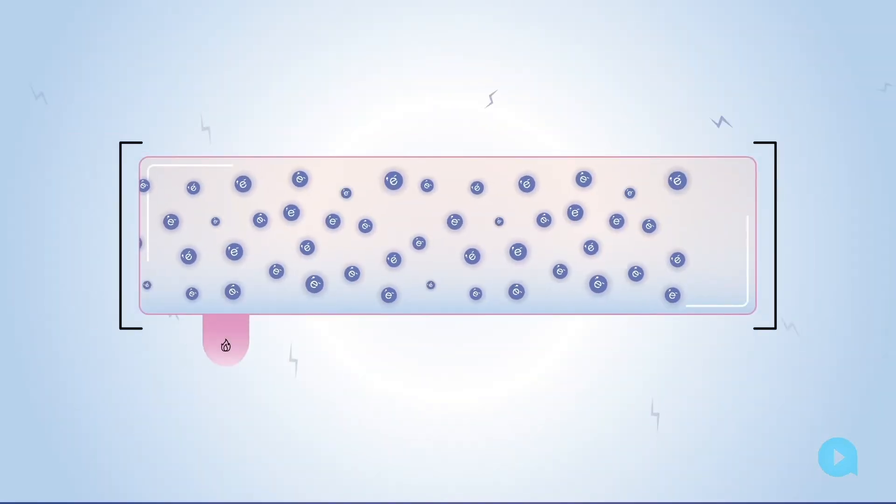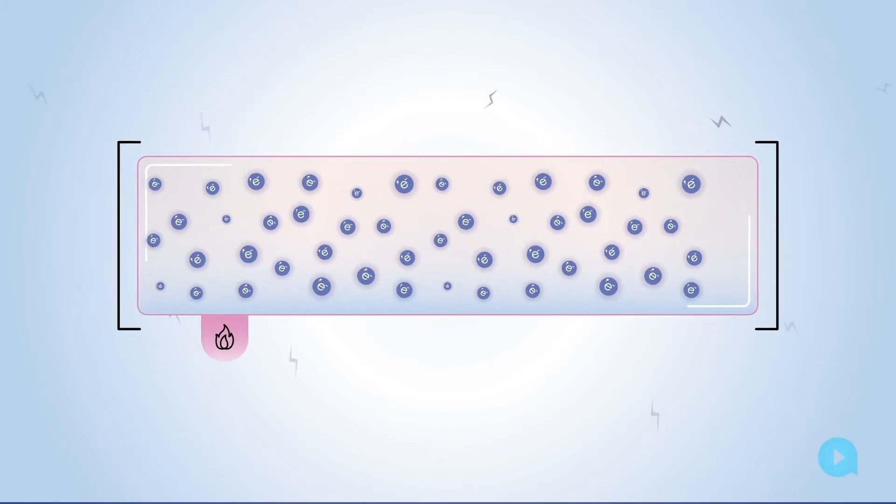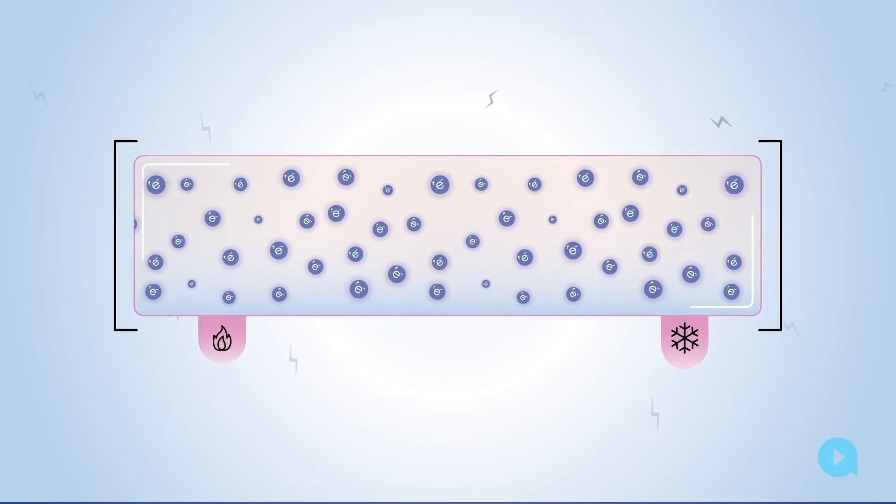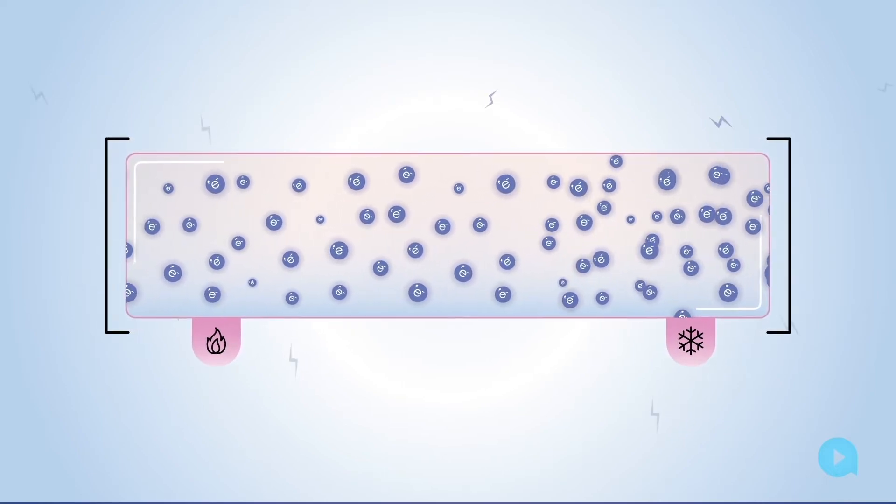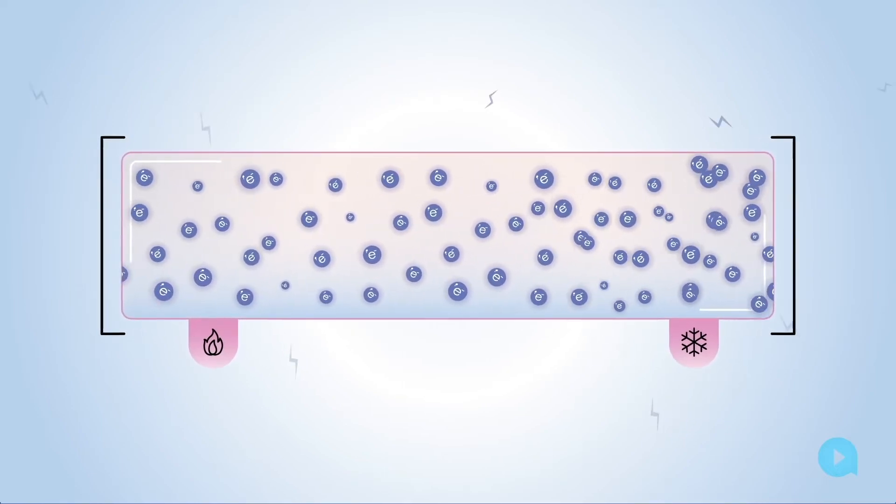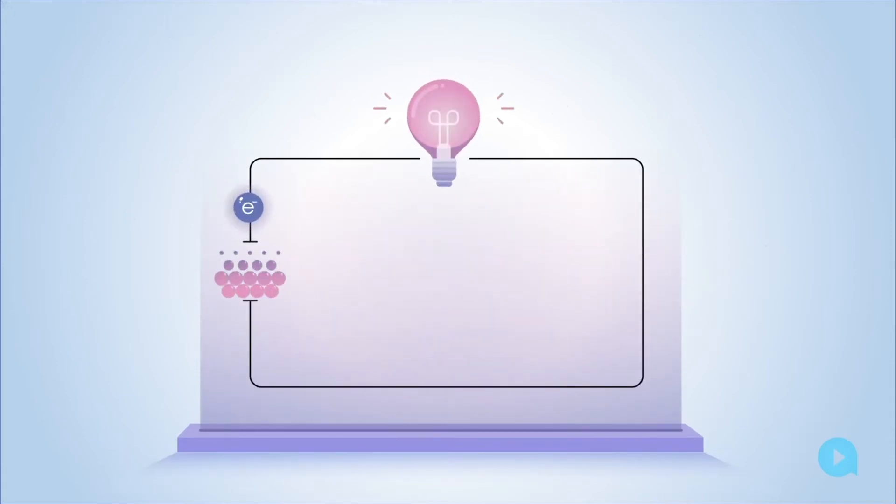If you take a bar of metal and heat one end, the electrons in the metal at that end move around faster, and so the number of them making it to the cold end can be higher than the number of electrons travelling randomly in the other direction. This builds up a voltage, or it can drive a current around a circuit, perhaps doing something useful like charging your phone battery.